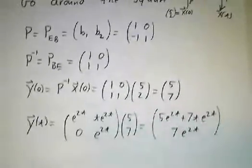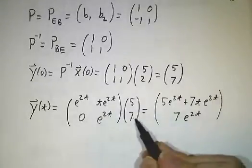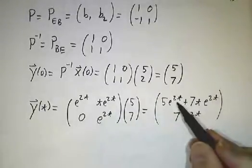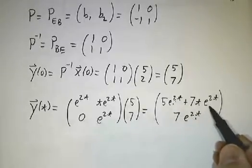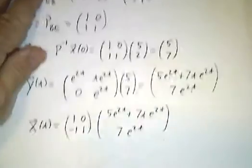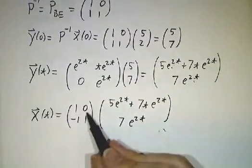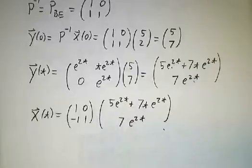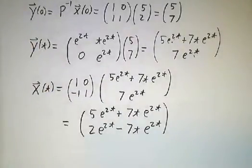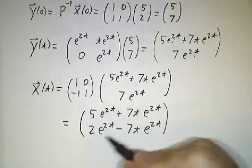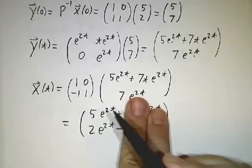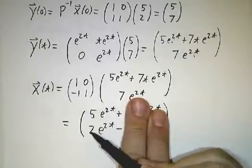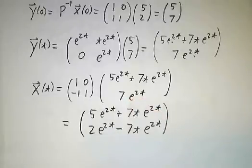Then we use our formula for converting y(0) into y(t), and we get some terms with e^(2t) in them, and we get some terms that go as t e^(2t). Then we multiply through by the other change of basis matrix, and there we go. We've got our solution. It's got e^(2t)'s in them, and it's got t e^(2t)'s in them. And you see that if you plug in t equals 0, these terms die, and you get 5e⁰, 2e⁰. That's 5, 2, and that was our initial condition.